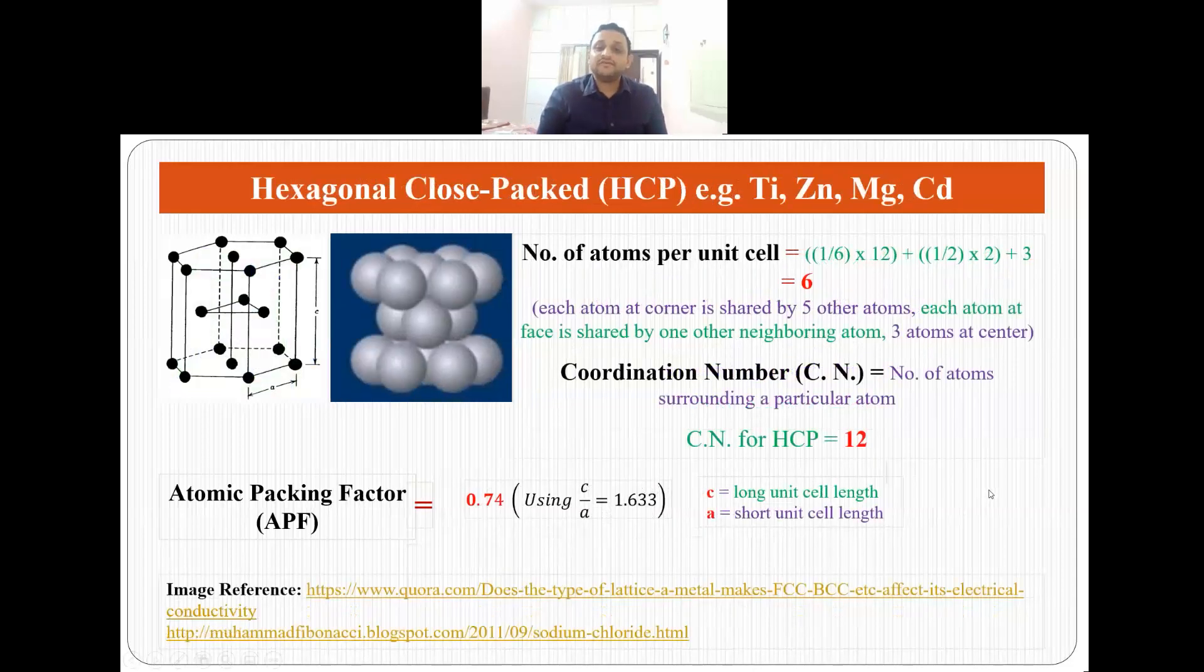Then comes hexagonal close packed or HCP structure. Here there are 12 atoms at the corners and each atom at the corner is shared by 5 other atoms. There are 2 atoms at the faces and each atom at the face is shared by one other neighboring atom and there are 3 atoms at the center. So the total number of atoms per unit cell is 1/6 times 12 plus 1/2 times 2 plus 3, that is 6.